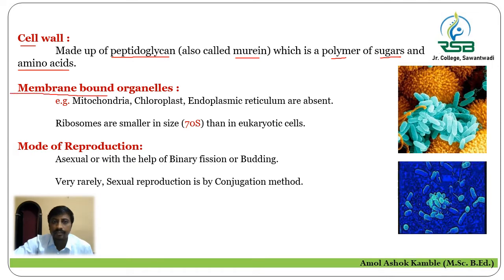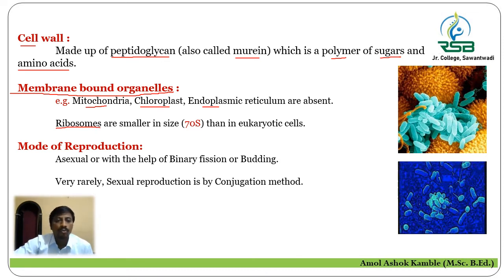Regarding membrane-bound cell organelles: structures such as mitochondria, chloroplast, and endoplasmic reticulum are absent in Kingdom Monera. Regarding the nature of ribosomes — the ribosome is the protein factory in every living organism. The size of ribosomes in Kingdom Monera is 70S, whereas in eukaryotic cells it is 80S.